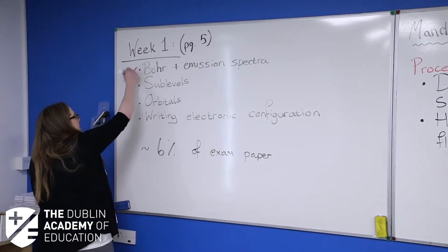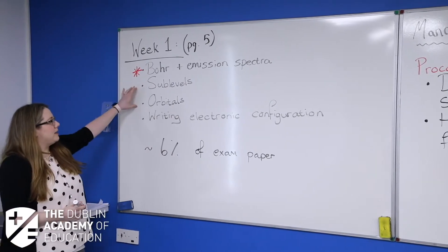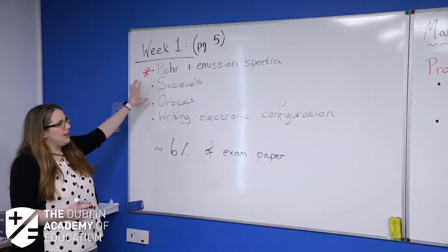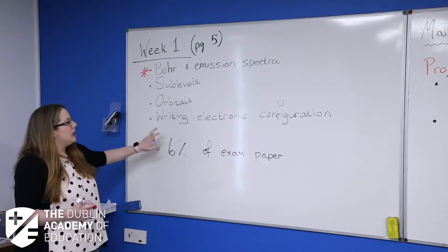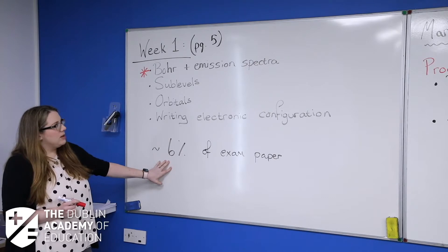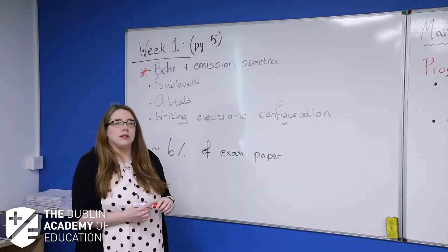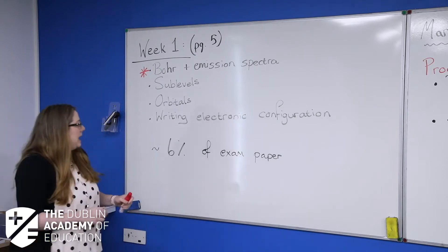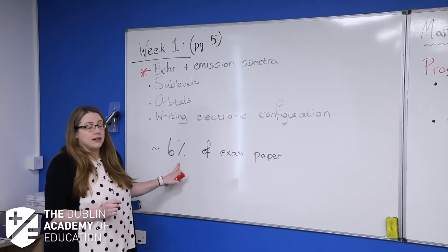Bohr and emissions factors are really important. We're also going to have a look at sublevels and orbitals, because your terminology and telling the difference between these two is quite important. Writing electronic configuration is key, and it's important to know that this whole topic is worth about 6% of your exam. It's a really nice one, so it's a good one to start off with — know this one inside and out for this year.